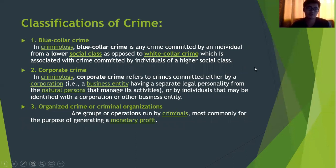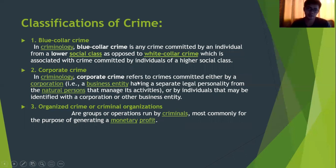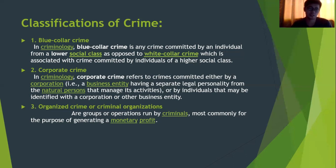Classification of crimes: First, blue collar crime is any crime committed by an individual from a lower social class, as opposed to white collar crime committed by individuals of higher social class. Next, corporate crime refers to crimes committed either by a corporation or by individuals acting on behalf of a corporation or business entity. Organized crime is committed by a group of persons run by criminals, most commonly for the purpose of monetary profit.